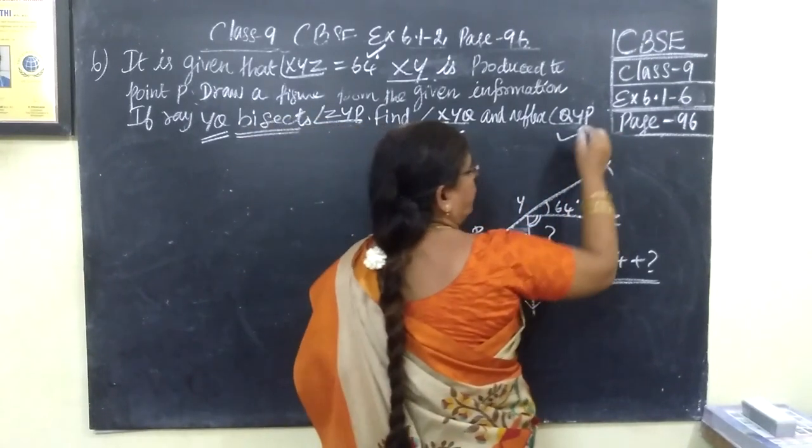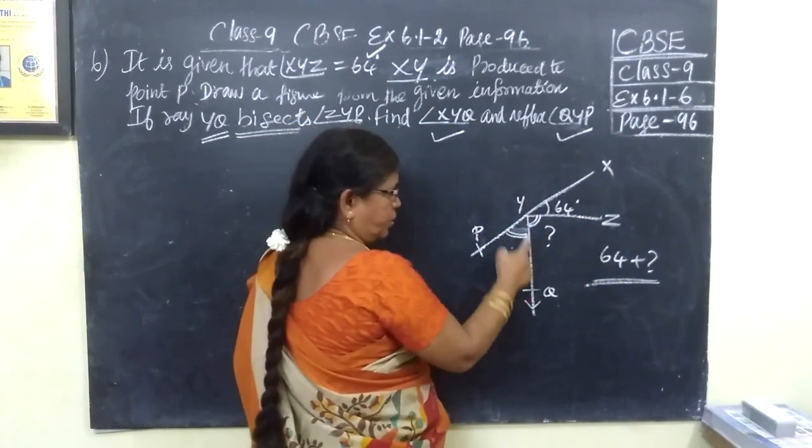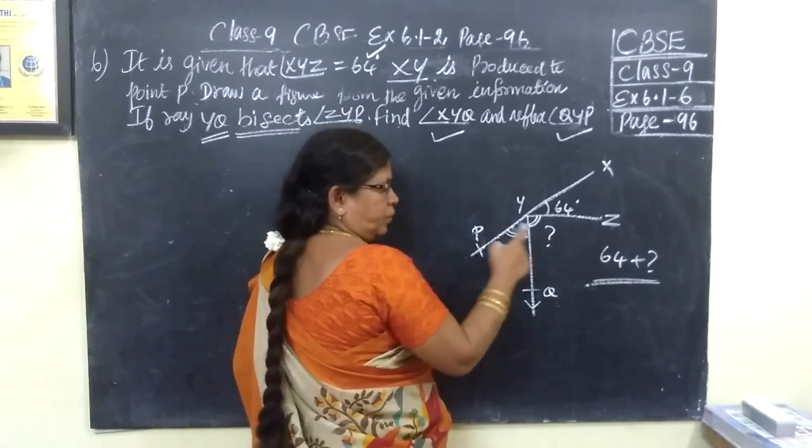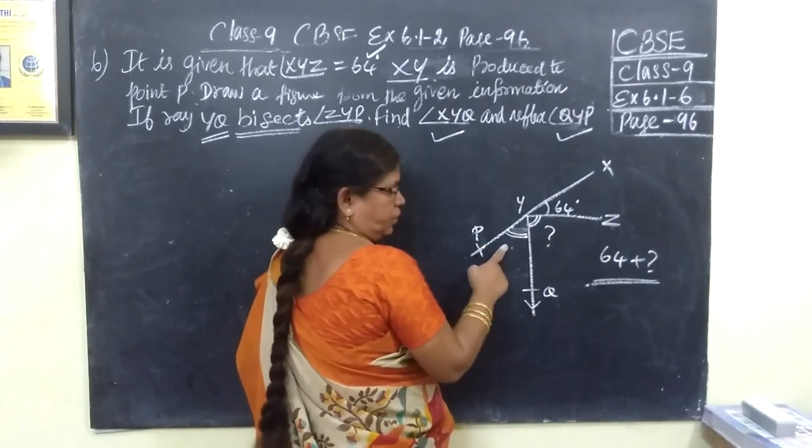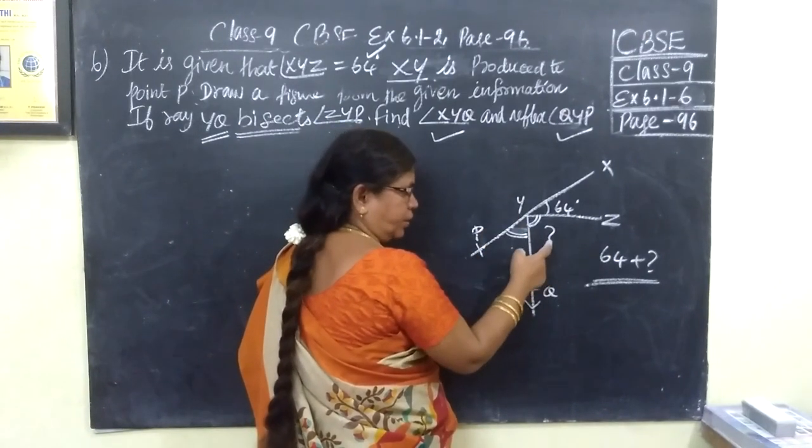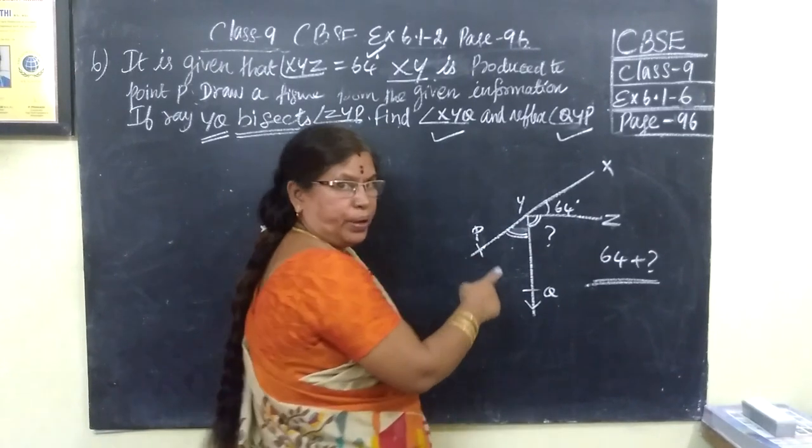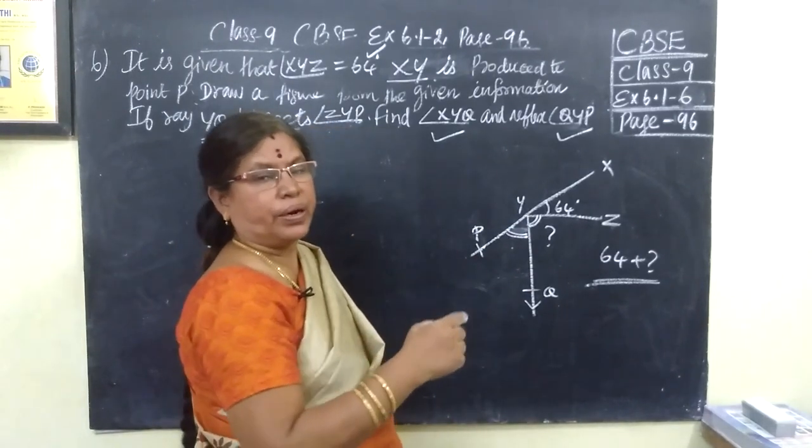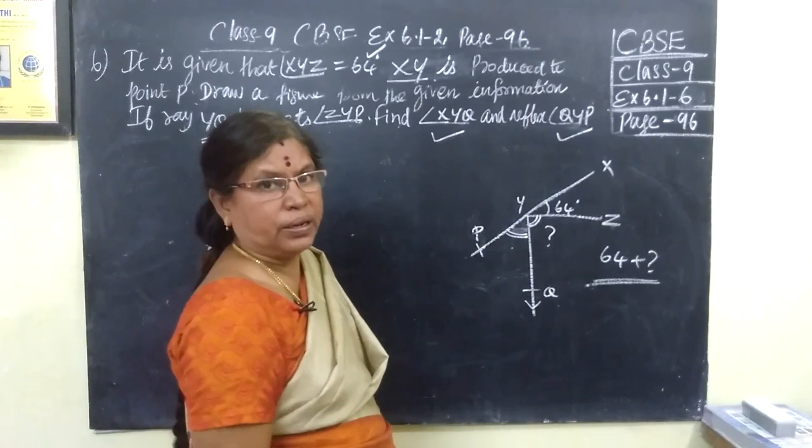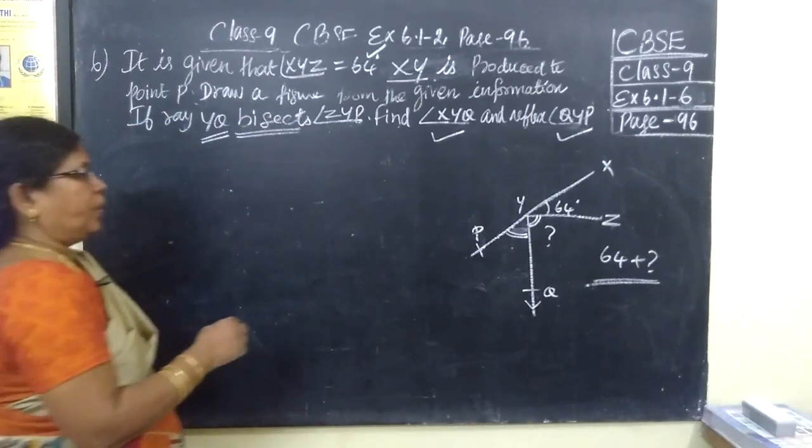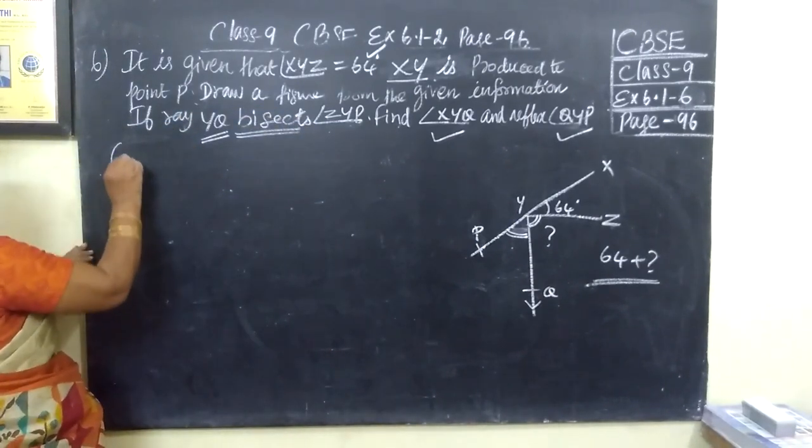Next, reflex QYP. Which is QYP? This is QYP. This and this both are equal. If you find this angle, the same angle is for QYP. Reflex means you are subtracting from 360 degree. Now we find what is given.